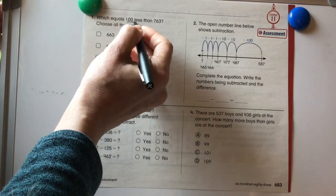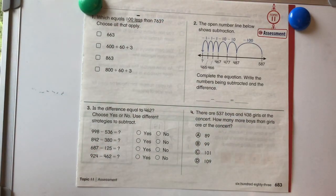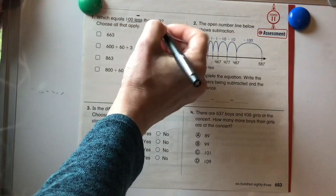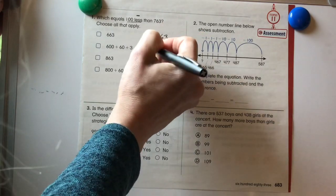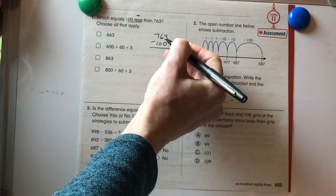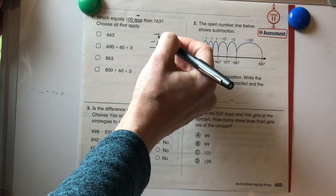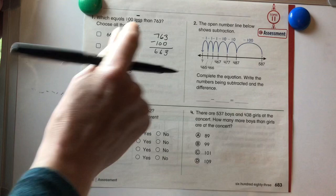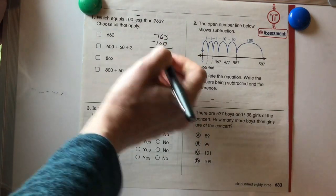Which equals 100 less, that means subtracting, than 763? So 763 minus 100. Let's go ahead and solve that real fast. 3 minus 0 is 3, 6 minus 0 is 6, and 7 minus 1 is 6. This is also a great one to do mentally in your head. So we know the answer is 663.